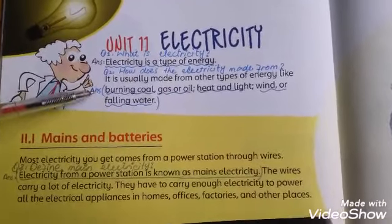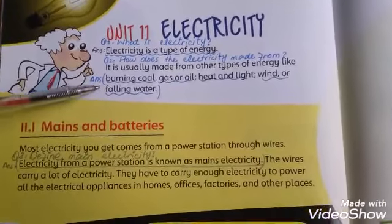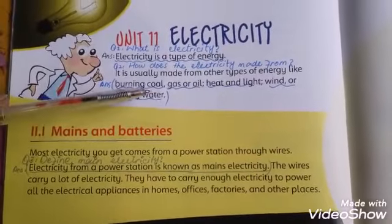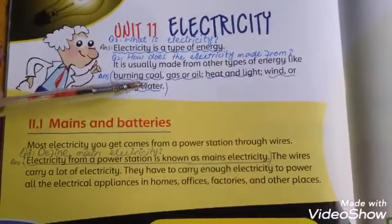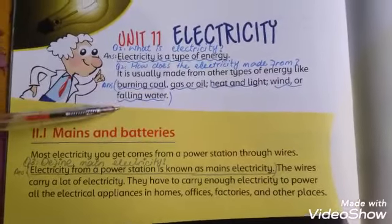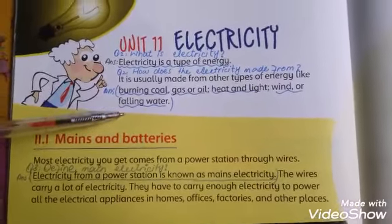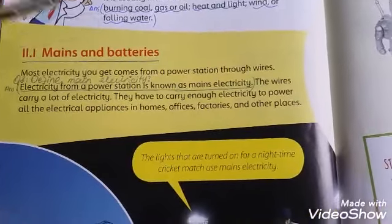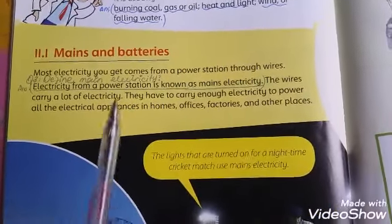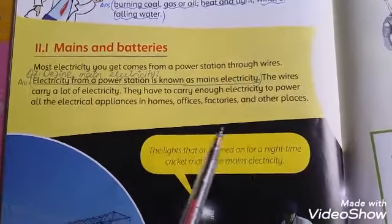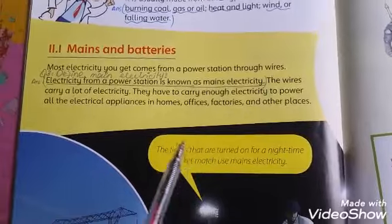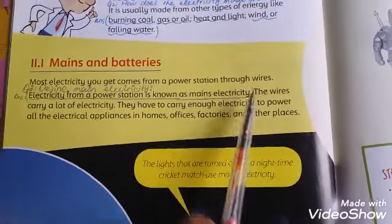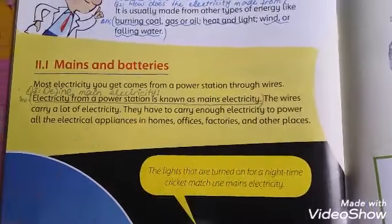How is electricity made? It is made from burning coal, gas, or oil; heat and light; wind; or falling water. Mains electricity and batteries are the main sources. Most electricity comes from power stations and reaches you through wires.